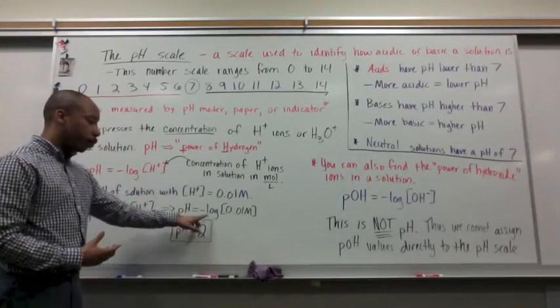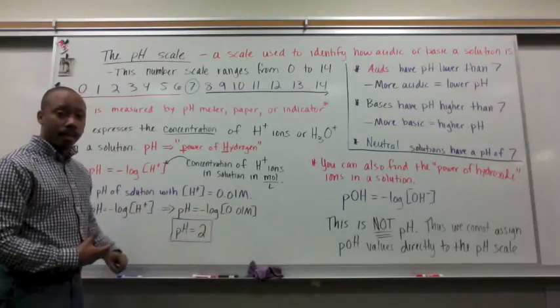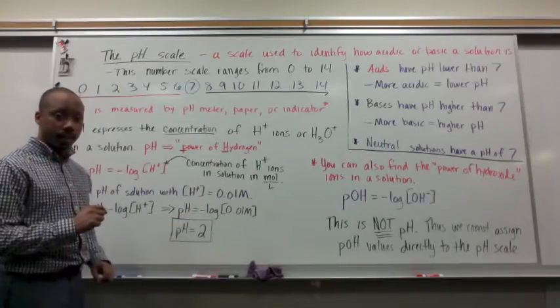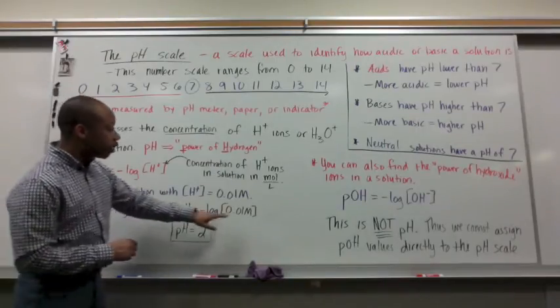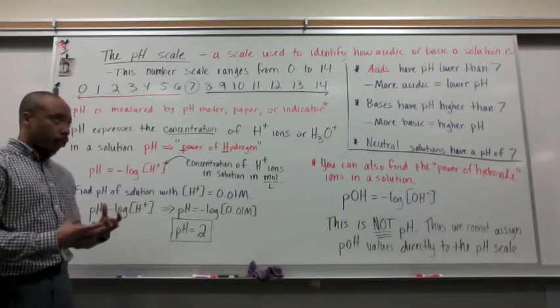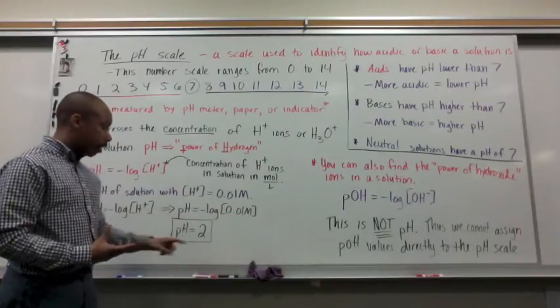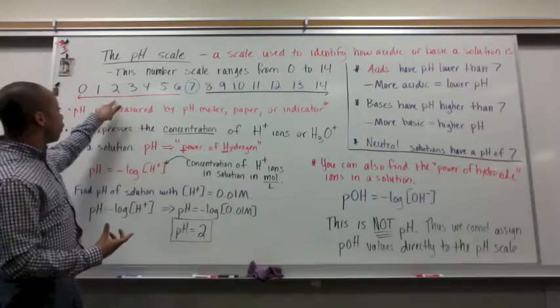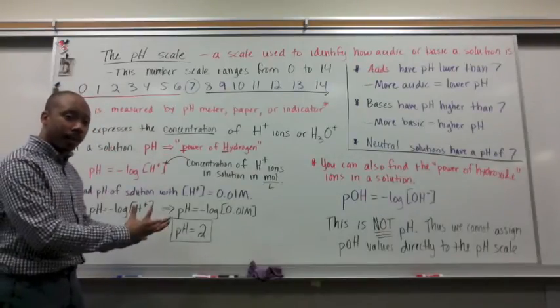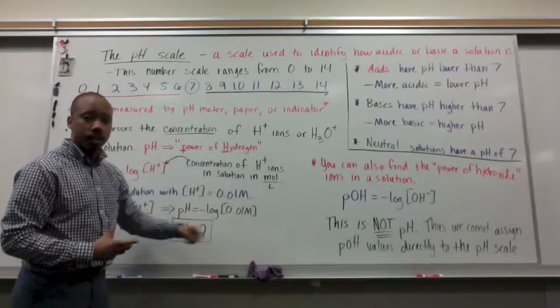Maybe in algebra 2 you will or have already. But if you have not, we're going to talk more about what this means in class. So for right now just go with me. This is a button on your calculator, find it. Once you do this you'll get a pH equal to 2. So a solution that has 0.01 molar concentration of hydrogen ions has a pH of 2. pH of 2 is acidic, so we can say that solution is acidic because of the concentration of hydrogen ions that it has.